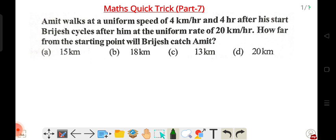Amit walks at a uniform speed of four kilometer per hour. The speed is uniform at four kilometer per hour. And four hours after his start, Brijesh cycles after him at a uniform rate of twenty kilometer per hour.